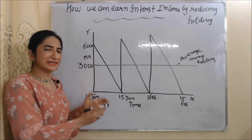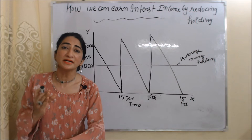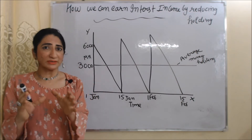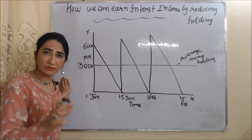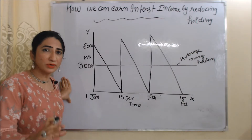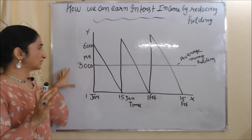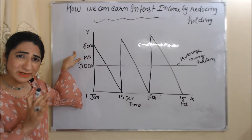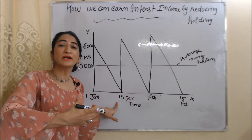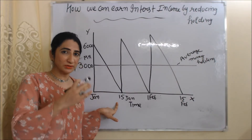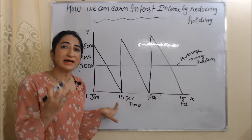Now with the help of this diagram, we will clearly understand how we can earn some interest income by reducing our money holding. Suppose your salary is 12,000 rupees and on the 1st of January you receive 12,000 rupees. Now you are not going to withdraw the whole amount at one time. You will withdraw only 6,000 rupees, spend it till the 15th of January, and invest the remaining 6,000 rupees in bonds or keep it in your savings account to earn some interest income.